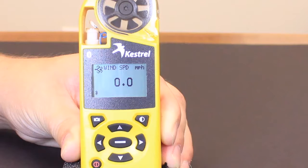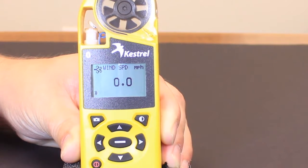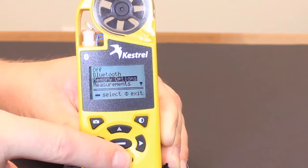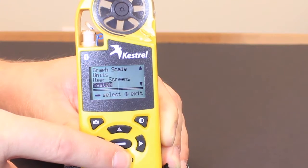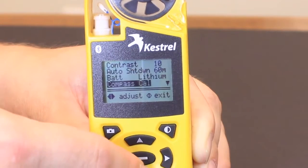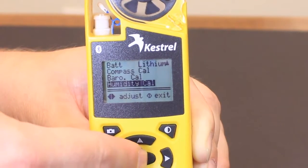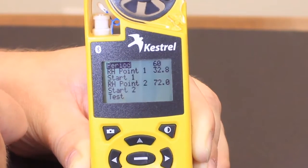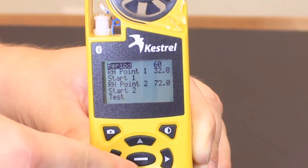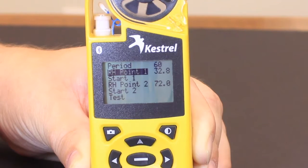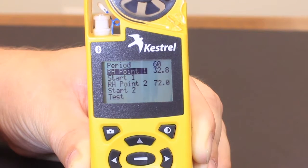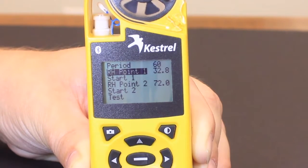In order to calibrate the humidity on the Kestrel 4000 series, you'll turn the unit on and press the power button to get to the main menu. You will scroll down until you see system. The period is going to be 60. That's going to be the amount of minutes that you want to leave it in each chamber, so do not change that. You'll go down to the RH.1, and you want to make sure that this reads the same as the first chamber, which is 32.8%, but use the left and right if it doesn't to adjust this to 32.8.